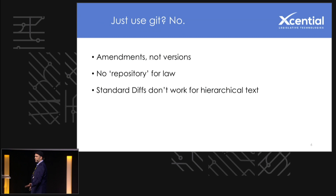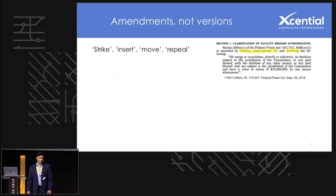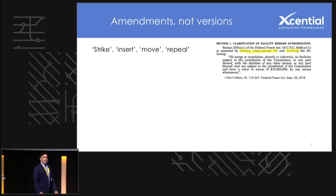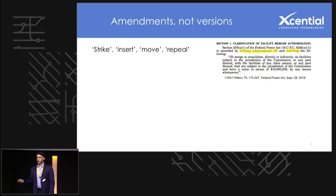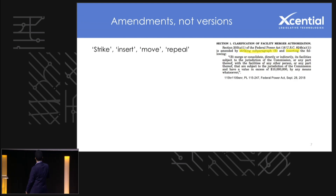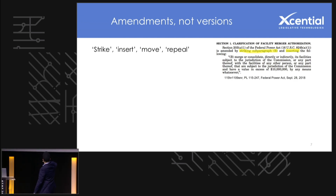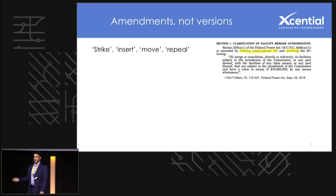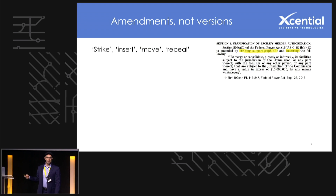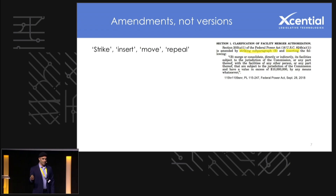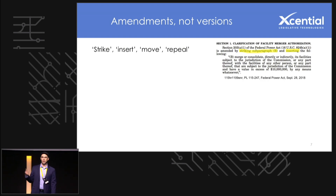The first reason you can't just use Git is that amendments to law — changes — are not made as versions generally. Often what you get is a sentence that says something like: 'The Federal Power Act is amended by striking a particular subparagraph and inserting the following text.' So you have to interpret that textual language. It often comes with verbs like strike, insert, move, repeal, amend.